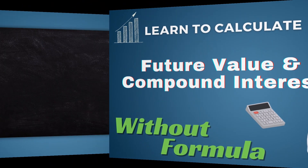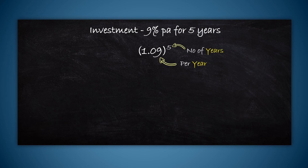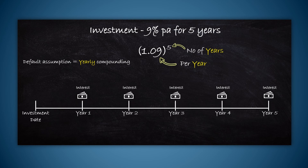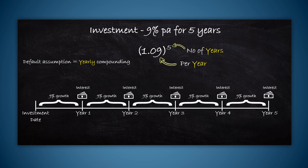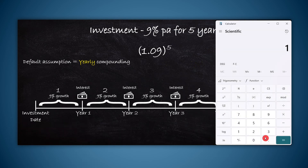Taking the example of an investment at 9% per annum for 5 years, the calculation will be 1.09 to the power 5. Here, the rate of 9% is the yearly rate and the power raised is the number of years. The underlying assumption in this calculation is that compounding happens annually — we are essentially adding the interest to the principal only at the end of each year. The interest rate we take is the growth rate until each instance of compounding, which is the yearly rate of 9%, and this will happen 5 times in the life of the investment, so we raise by 5. 1.09 to the power 5 gives 1.538, so 1 rupee will become 1.538 after 5 years.